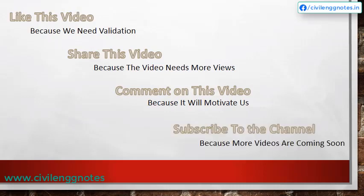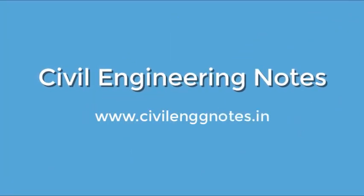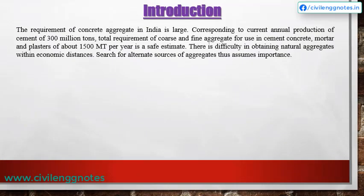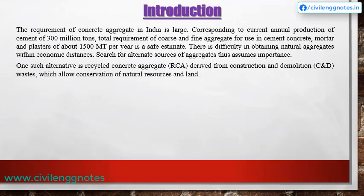Let's begin. Introduction: The requirement of concrete aggregate in India is large, corresponding to current annual production of cement of 300 million tons. Total requirement of coarse and fine aggregate for use in cement concrete, mortar, and plasters is about 1,500 metric tons per year. There is difficulty in obtaining natural aggregates within economic distances, so the search for alternate sources of aggregates assumes importance. One such alternative is recycled concrete aggregate derived from construction and demolition wastes, which allows conservation of natural resources.